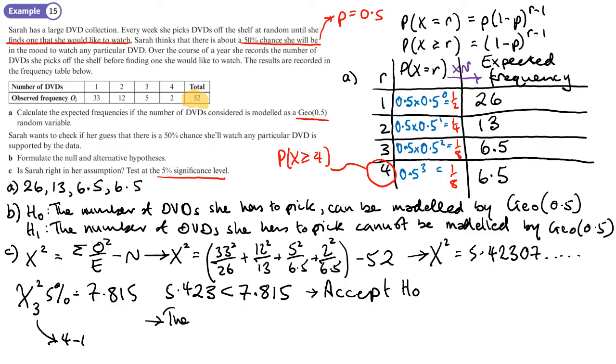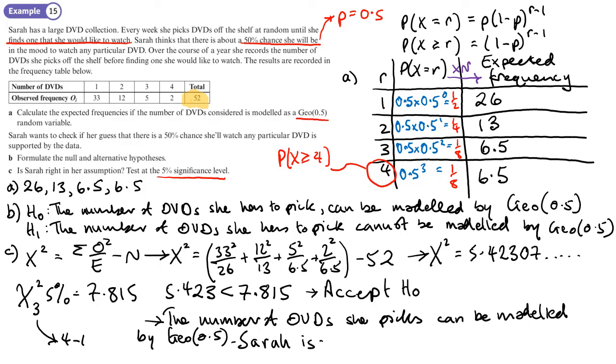And that means that's my conclusion, that the number of DVDs she picks can be modelled by a geometric distribution of 0.5. Sarah is correct.